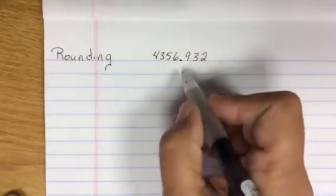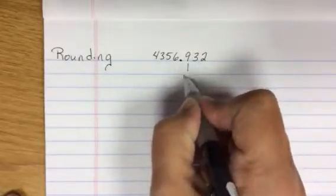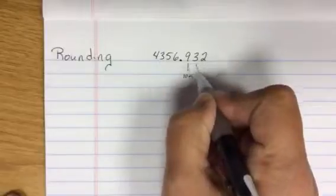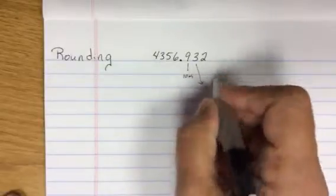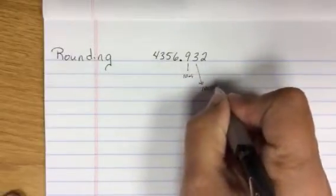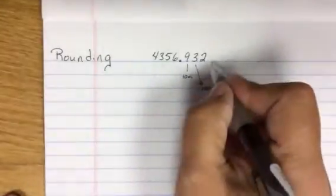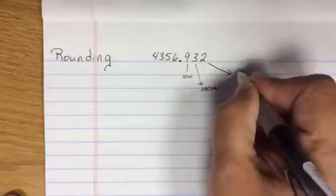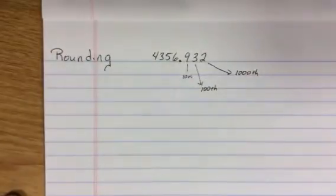If we say round to the nearest tenth, we're talking one decimal place. To the nearest two places, we're talking rounding to the nearest hundredth. Three places, we're rounding to the nearest thousandth. We can keep going, but suffice.